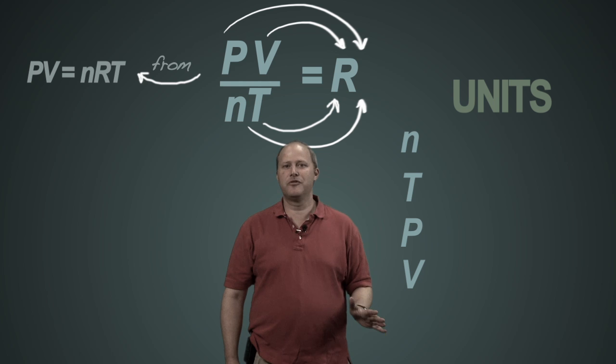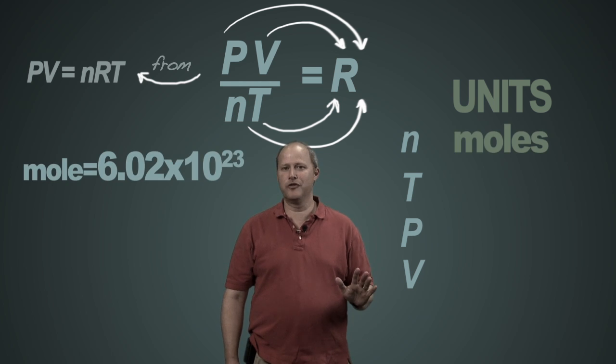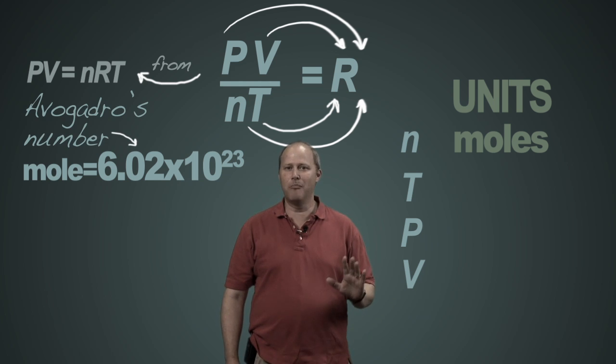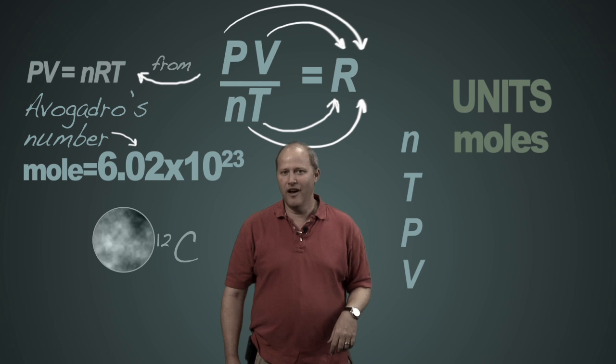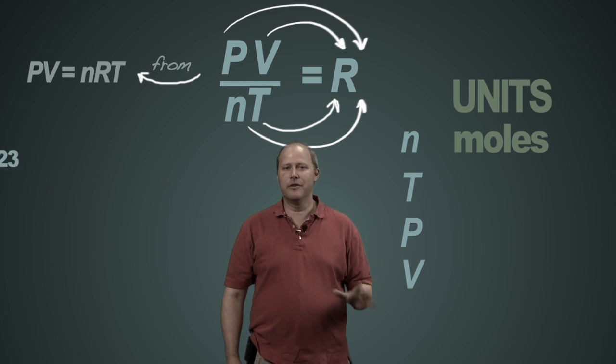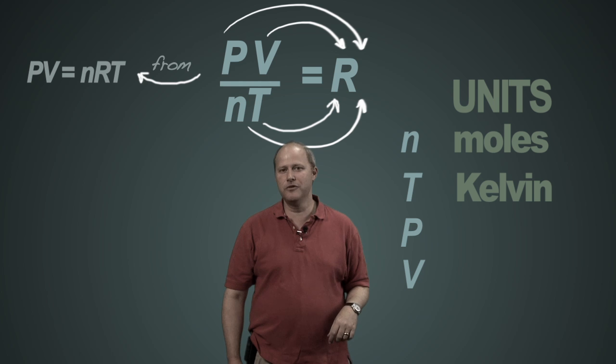Almost universally in chemistry, we stick to the same value for units of moles. And we've agreed on what the definition of Avogadro's number is, and a mole is the number of particles that are in 12 grams of carbon. For temperature, we're always going to use absolute temperature, and we're going to stick with units of Kelvin.